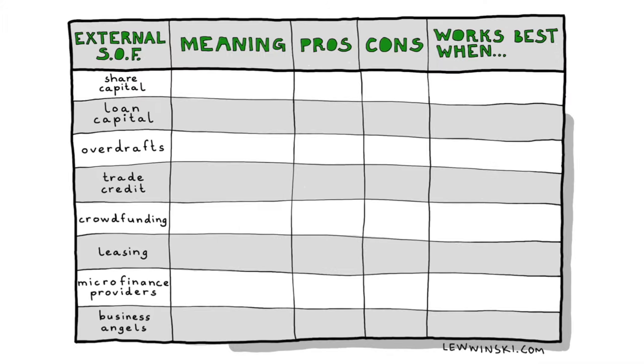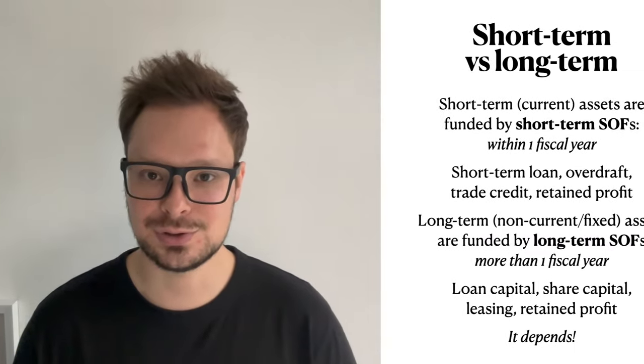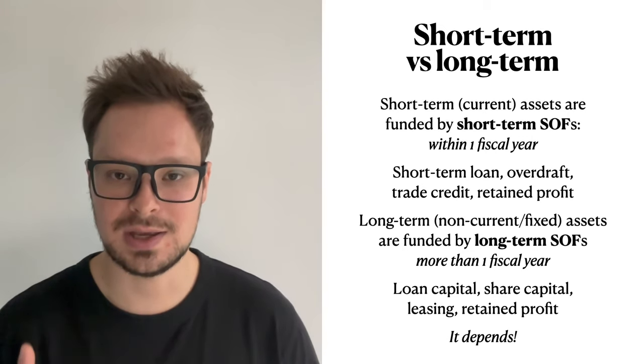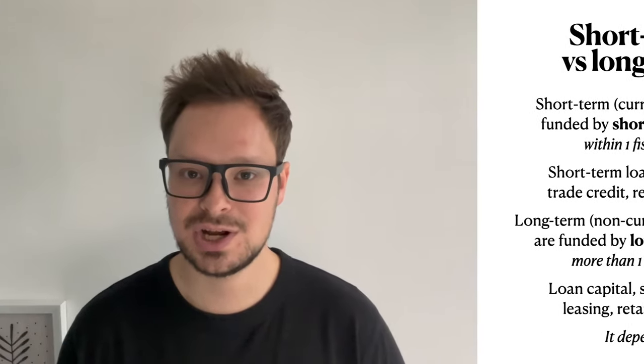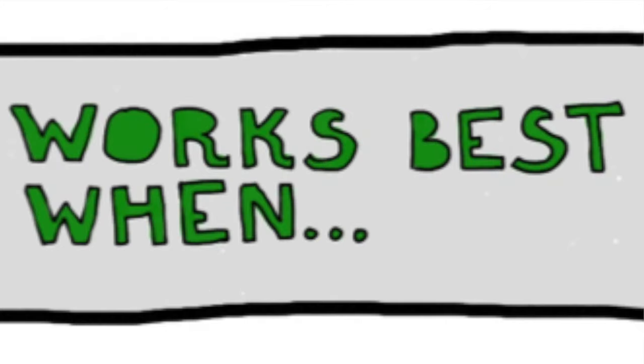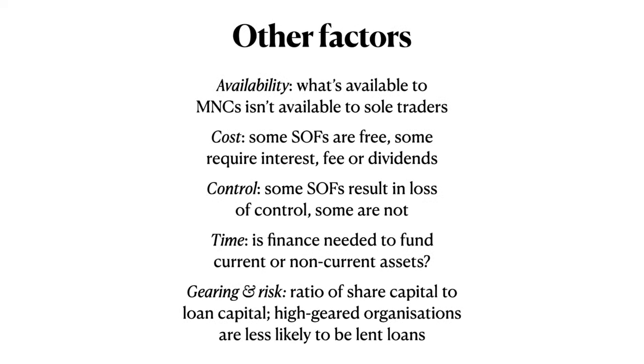These are five additional factors to consider when making judgments about the appropriateness of different sources of finance. We've learned 11 sources of finance — three internal and eight external — plus I encourage you to learn eight more on your own. You can categorize them into short-term and long-term using the one-year rule, and then make judgments about appropriateness using pros, cons, when it works best, and these other factors. Once you start practicing it, this should become easier — practice makes perfect.